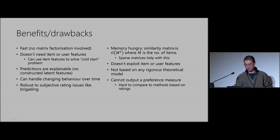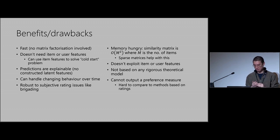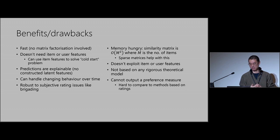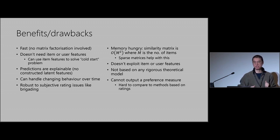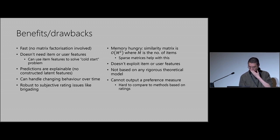The drawbacks — and this is where I show I really should not be in sales. The similarity matrix is order M squared, where M is the number of items, so this can quickly become very large. Sparse matrices do help, and again this is where RCPP Armadillo was very useful. It doesn't exploit item or user features, so if you have those features and a model that uses them properly, that can give you a better result. It's not based on any rigorous theoretical model. And it doesn't really output a preference measure — it just says here are the things this person is going to buy. So you can't really use measures like RMSE, and it's hard to compare to methods based on ratings.